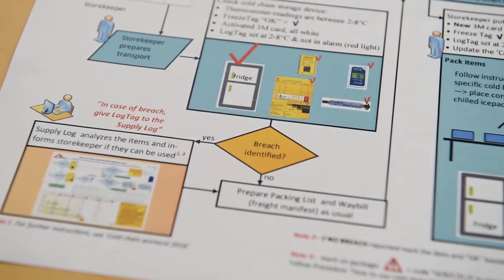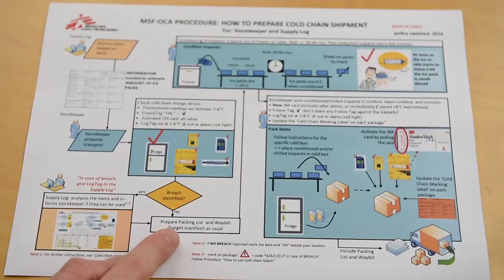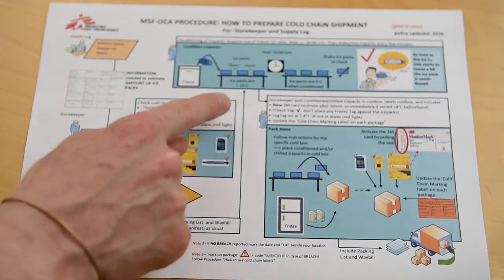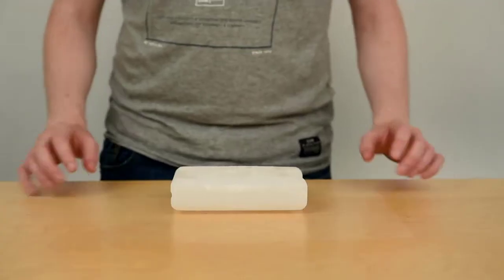If any of the temperature monitoring devices in the fridge show signs of a temperature breach, inform the supply log. If there was no temperature breach, follow the arrow upwards to the section showing how to condition ice packs.